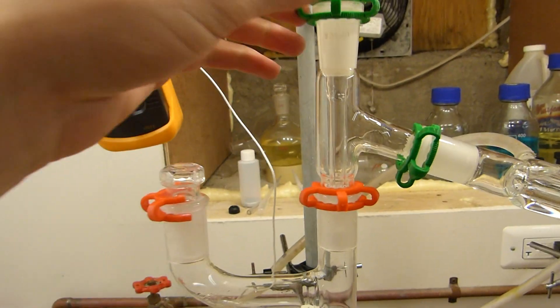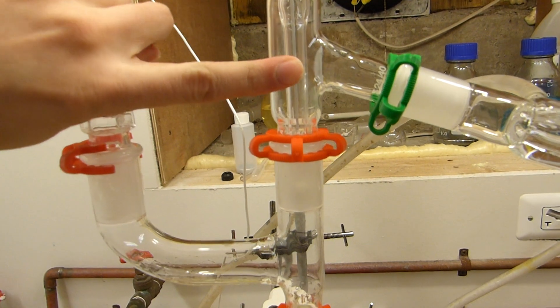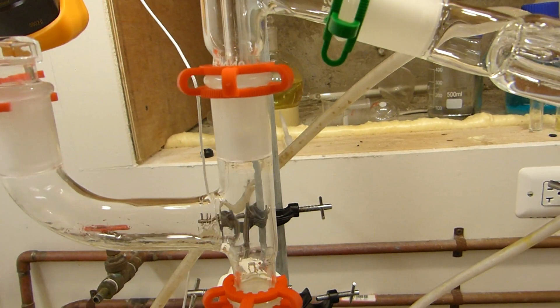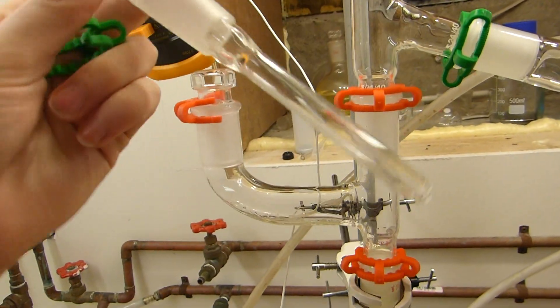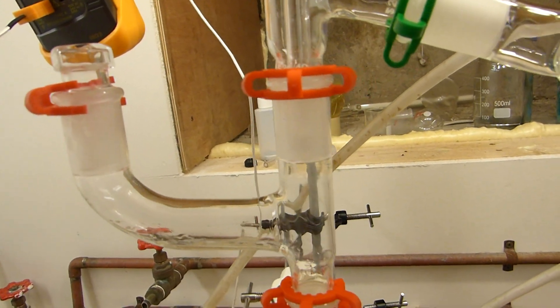And then I guess the last aspect is taking the temperature of what's coming over. Typically you'd have a thermometer adapter up here and the thermometer would extend down and the bulb would be pretty much even with where the vapors get taken off. I have here this special thermometer well. It's like a test tube essentially, and that sits down in there like that.